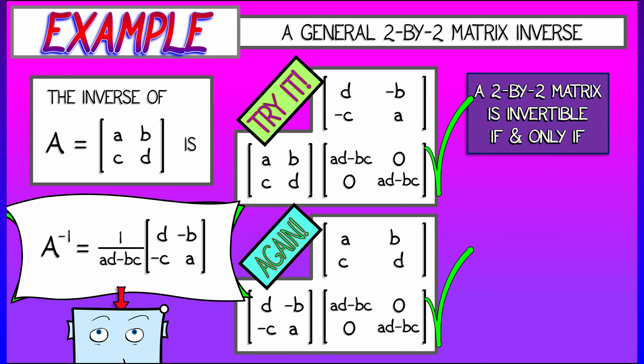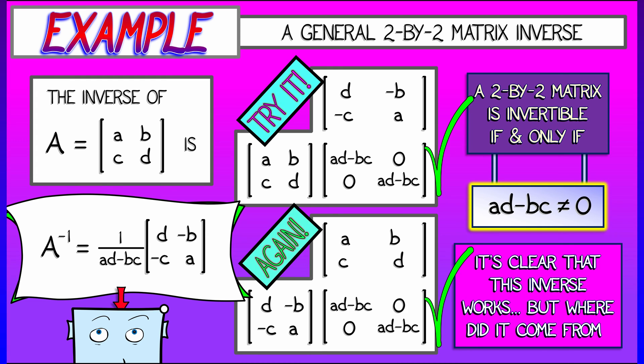So there we go. 2x2 matrix, always invertible. Oh, no, wait. It's not always invertible, because we're dividing by this quantity AD minus BC. It is invertible when that quantity is non-zero. What an interesting quantity that is.